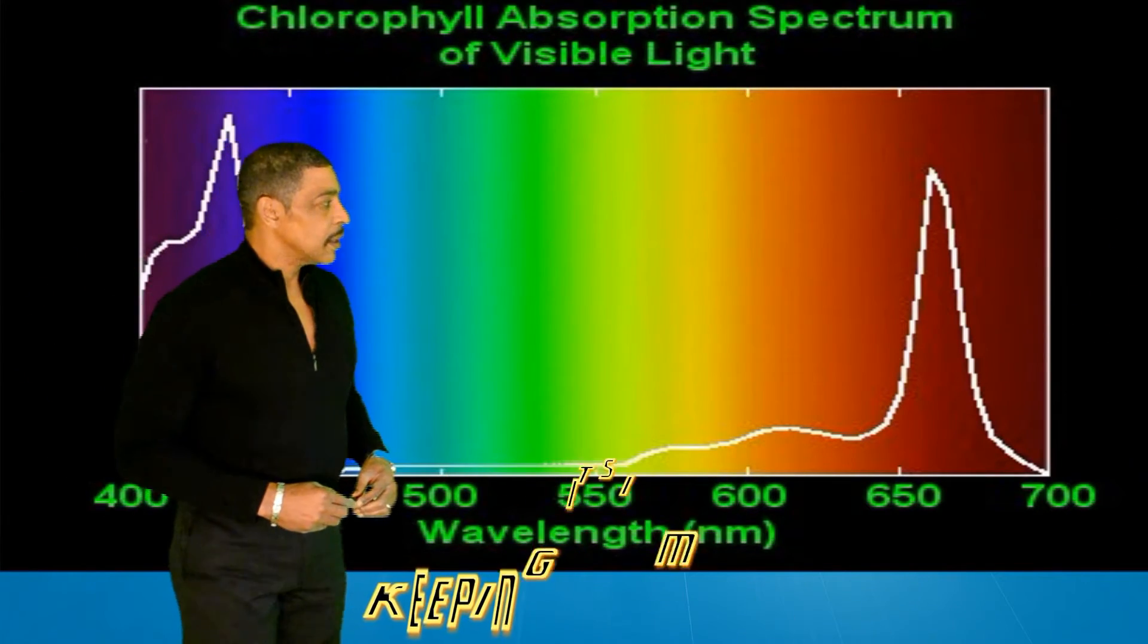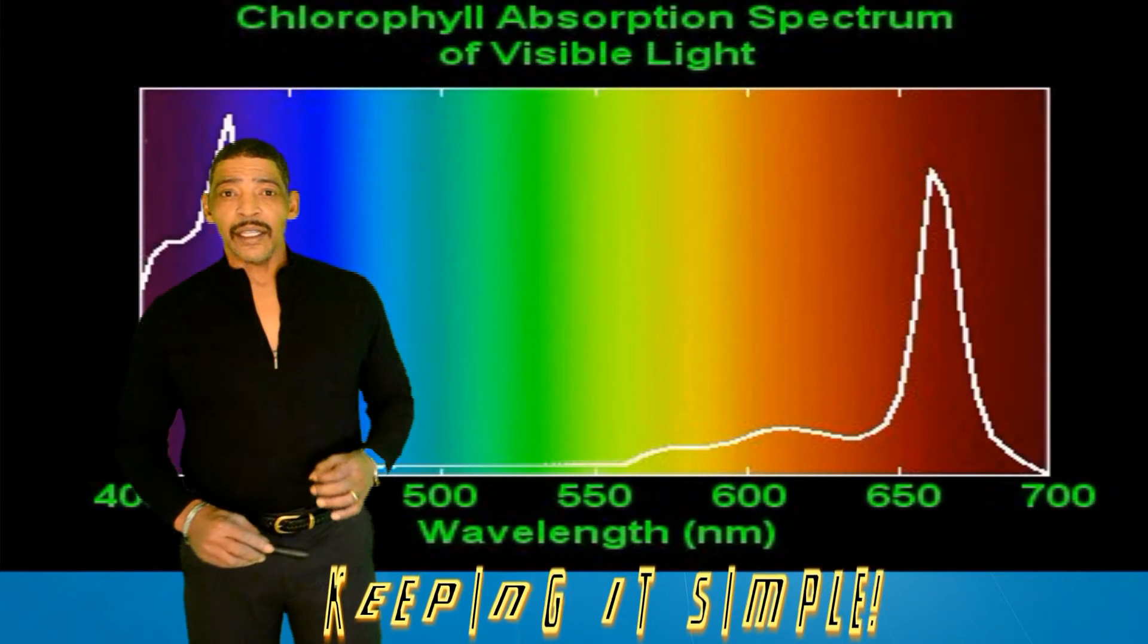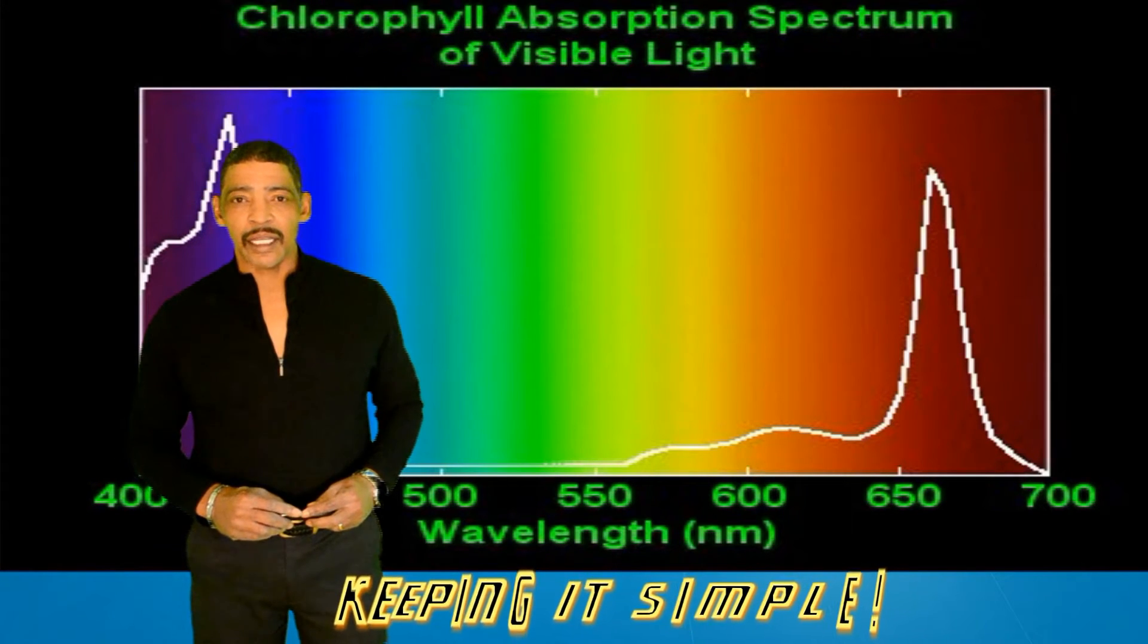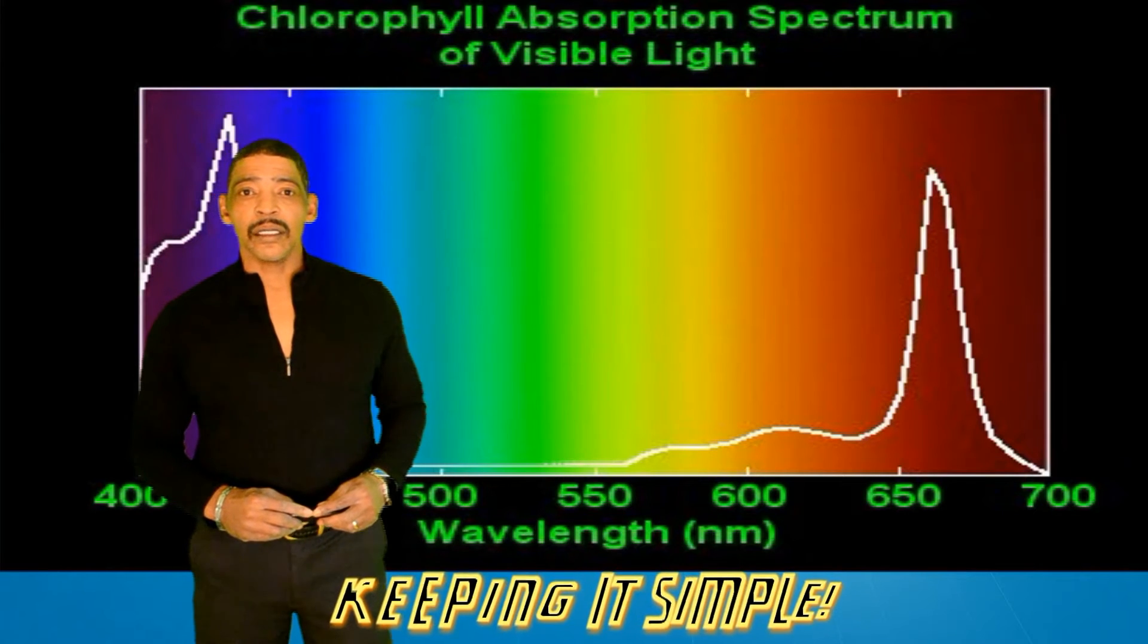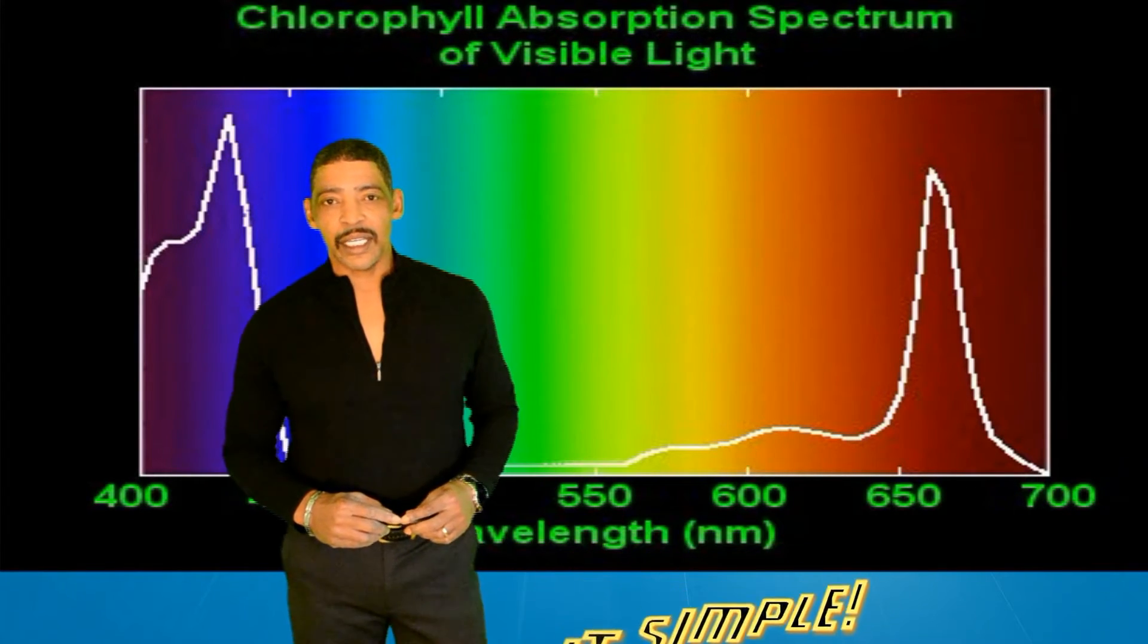However, for the sake of simplicity, let's assume that the optimum wavelengths of light absorbed by both chlorophylls are 450 nanometers and 700 nanometers.